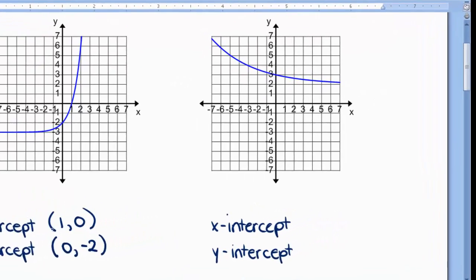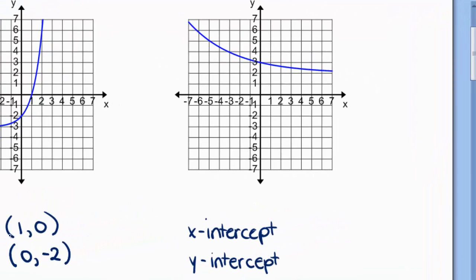Now look at this second graph. If I'm looking for the x intercept, notice that the curve isn't crossing the x axis. In fact, it's looking like it's leveling off right around the 2. So that means there is no x intercept. I just write none. For the y intercept, the curve crosses the y axis at 3. So the y intercept is (0, 3).